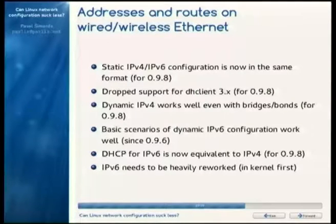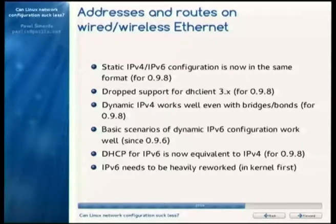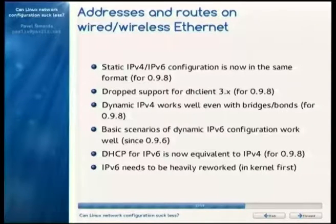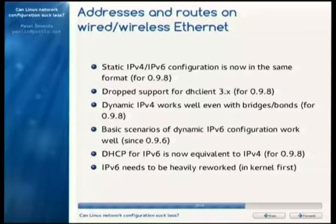We were trying to make sure that bridging and bonding work well with dynamic configuration, which needed some deep code changes in NetworkManager's core. We can do some IPv6 — it works in simple networks including SLAAC — but IPv6 is more complicated and we don't support it perfectly yet.